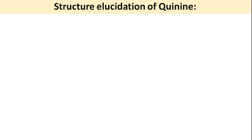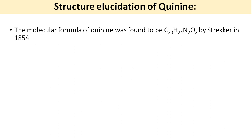At that time, whatever chemical tools and reactions were available, the structure of quinine was elucidated. As the first step, quinine's molecular formula was successfully determined to be C20H24N2O2 by Strecker in 1854.